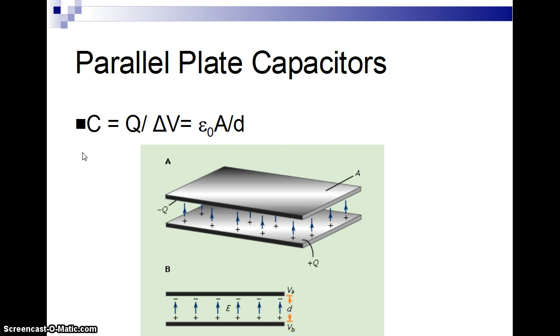The capacitance, the amount of charge that they can hold up, depends only on this constant epsilon 0, which we'll talk about here in just a moment, times the area of the charge divided by the distance between them, and that's it. It doesn't have anything to do with what type of material they're made of.